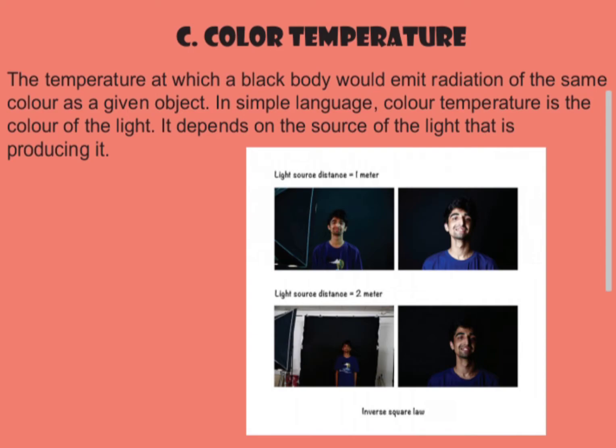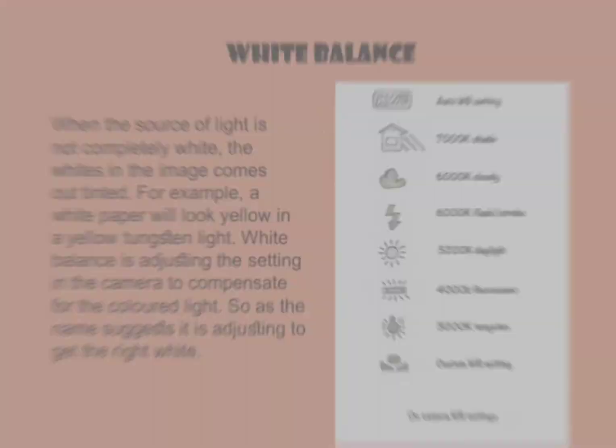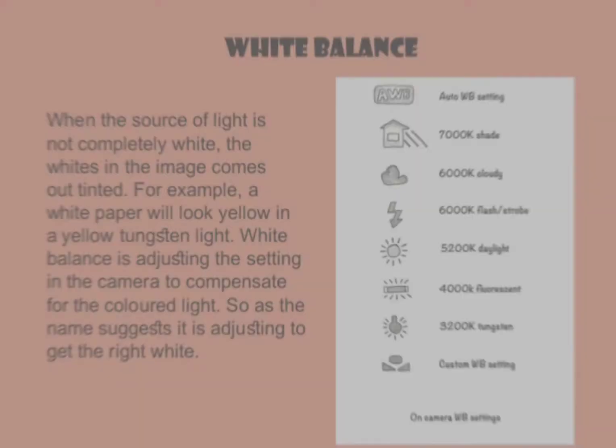Color temperature is the temperature at which a black body will emit radiation of the same color as a given object. In simple language, color temperature is the color of the light, and it depends on the source that is producing it.